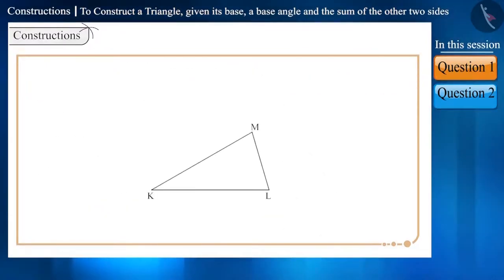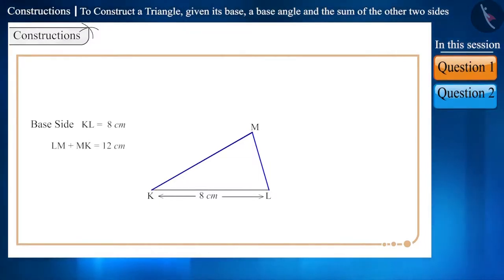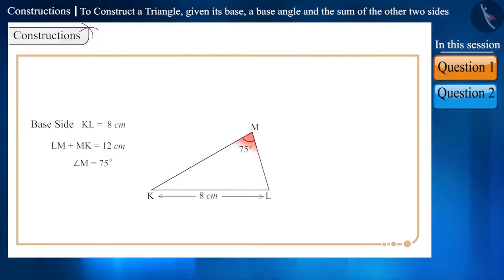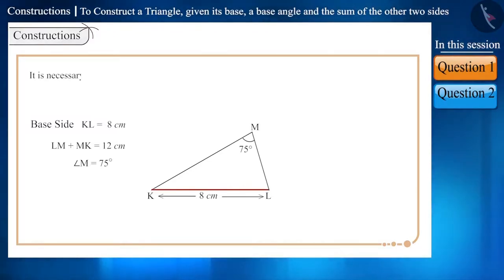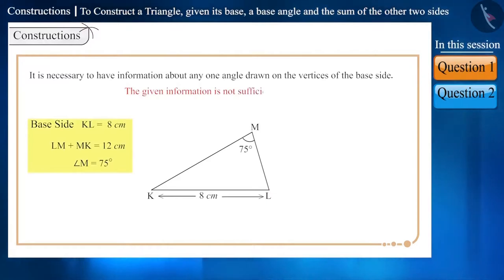For example, in triangle KLM, if you are given the length of side KL as 8 cm and the sum of sides LM and MK as 12 cm, but we are not given the measure of angle K or angle L. Instead, we are given the measure of angle M as 75 degrees. It is necessary to have information about any one angle drawn on the vertices of the base side. Therefore, the given information is not sufficient.